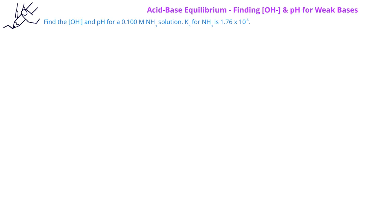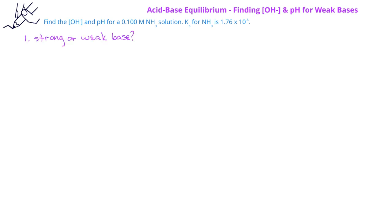In this problem, we're asked to find the concentration of the hydroxide ion at equilibrium as well as the pH for a 0.100 molar ammonia solution. We're also given that the base ionization constant for ammonia is 1.76 times 10 to the minus 5. The first thing we want to do is identify whether this base is a weak base or a strong base. Since ammonia is not on our list of strong bases that we've memorized, we can assume that ammonia is going to be a weak base.